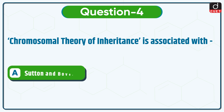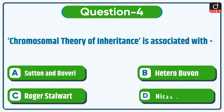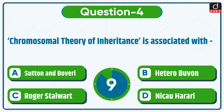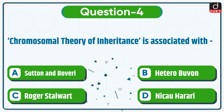Next question: the chromosomal theory of inheritance is associated with which of the following? Sutton & Boveri, Hetero-Bowon, Rogers-Talwart, or Nikau-Harari? The correct answer is Sutton & Boveri.